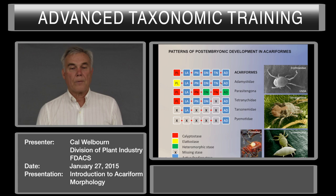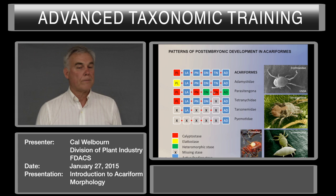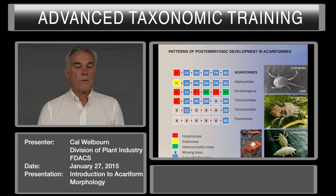Then we have the Parasitengona—chiggers, water mites, erythreids. They have an alternating life cycle of inactive pre-larva, inactive protonymph, inactive tritonymph. They have an active larva which is a parasite of arthropods or vertebrates, a free-living predator deutonymph, and a free-living predator adult. So if you're out collecting, you're only going to find a larva, deutonymph, or adult. The pre-larva, protonymph, and tritonymph actually exist within the cuticle of the preceding stage.